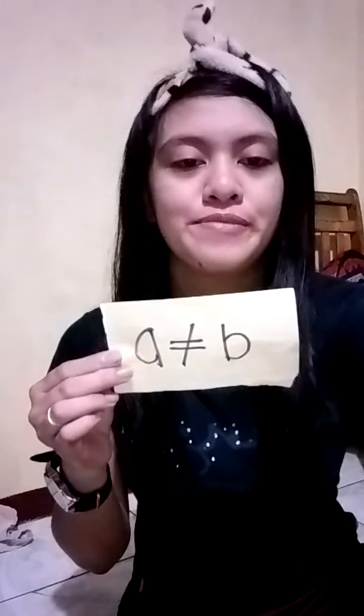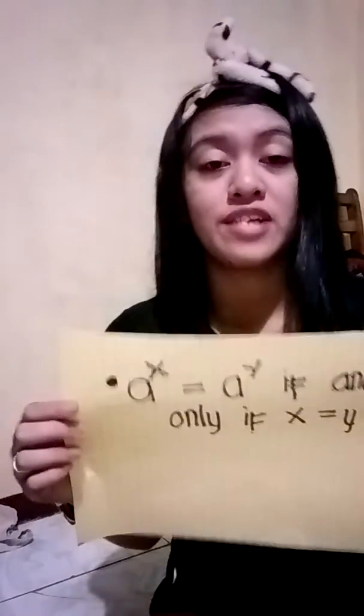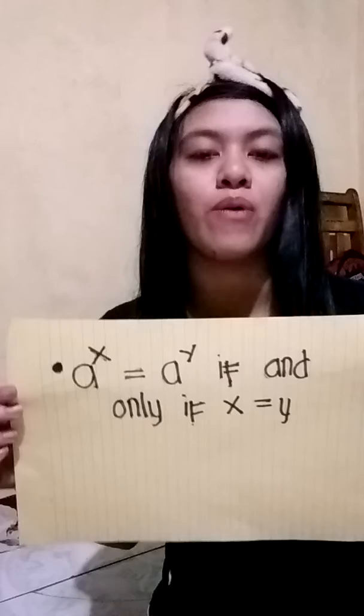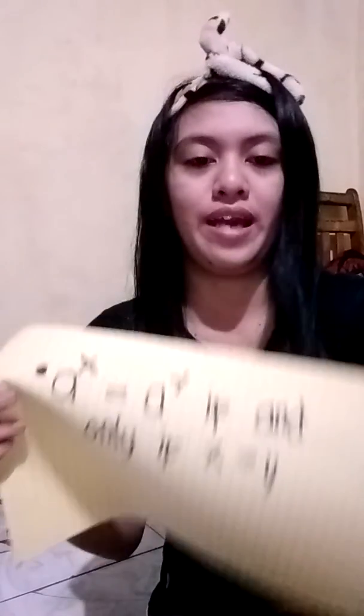How was your feeling after recalling the laws of exponents? Do you remember the past lessons that you encountered with your past teachers? So let's move on to the properties of exponential equations. For positive real numbers a and b, where a is not equal to 1: a raised to the power of x is equal to a raised to the power of 5 if and only if x is equal to 5.